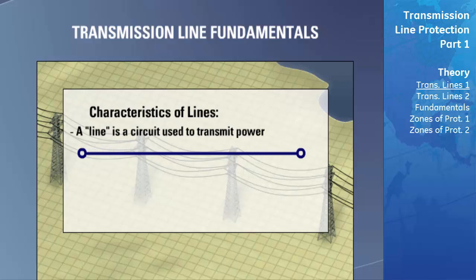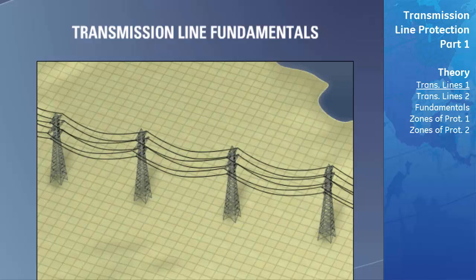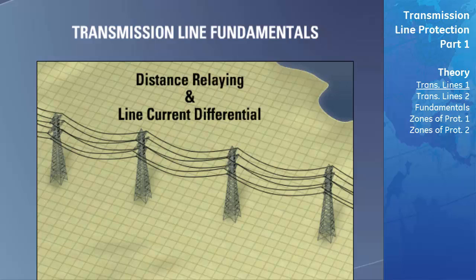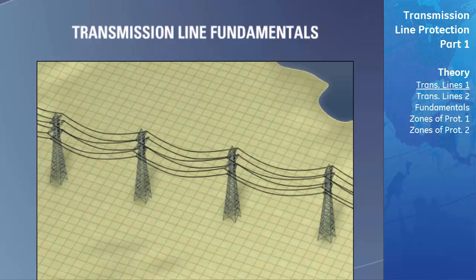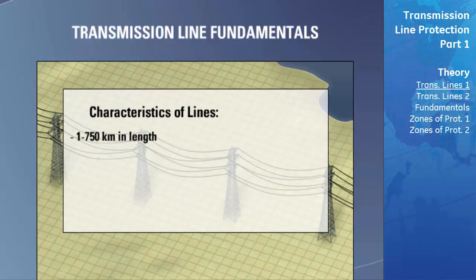The two techniques of line protection we will address are distance relaying and line current differential. We will first look at distance relaying. Transmission lines that are protected using distance relays are usually at least one kilometer in length and can reach distances of 750 kilometers or more.